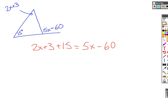We looked at an example to figure that out. In this one, 5x minus 60 is the exterior angle. It must be equal to the interior angles, which are 2x plus 3 and 15. So from there, it would just be solving a problem like we've done many times before.